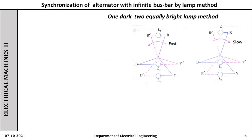The phasors of R, Y, B shown in blue color represent the machine which is already synchronized to the bus bar. The phasors R dash, Y dash, and B dash shown in magenta color are for the incoming machine. At this stage, say we have started the incoming machine and run it at synchronous speed. Its frequency will be near to the bus bar frequency, but may not be exact. We can measure the voltage; the incoming machine voltage is, say, equal to the bus bar voltage.